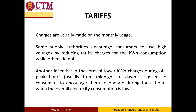Charges are usually made on monthly usage. In Malaysia we have three suppliers: TNB for Peninsular Malaysia, Sarawak Energy Supply for Sarawak, and Sabah Electricity Supply for Sabah. Supply authorities encourage consumers to use high voltage by reducing tariff charges per kilowatt-hour. Another incentive is lower kilowatt-hour charges during off-peak hours — typically midnight to dawn — to encourage consumers to operate when overall electricity consumption is low.